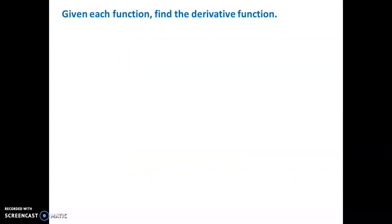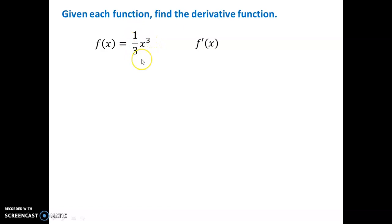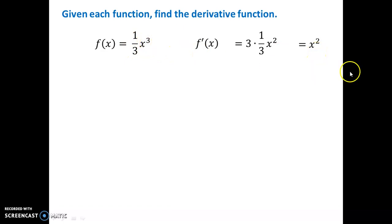Let's look at the power rule for a few more examples because these are some tougher ones that may help you with your work today. Given each function, find the derivative. Here's a function f of x. You're going to drop that power in front, but now there's a constant or coefficient in front, so that power will multiply the coefficient. So we have 3 times that 1/3, and then the power has dropped by 1. Now 3 times 1/3 should cancel because it becomes 1, so we just have x squared. That's what you do when you have a coefficient.